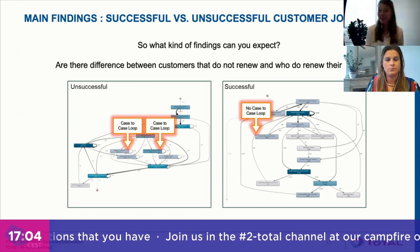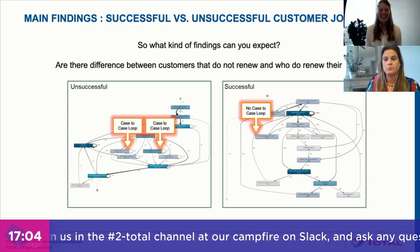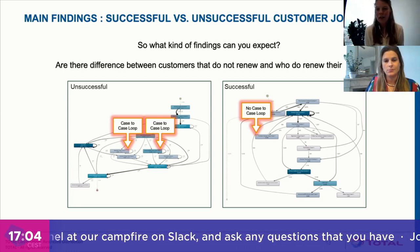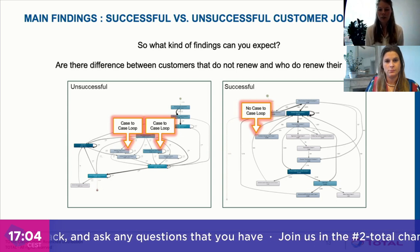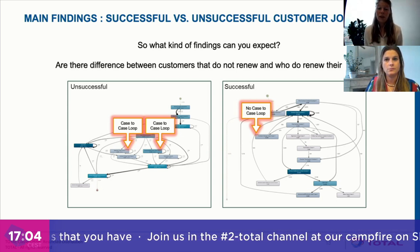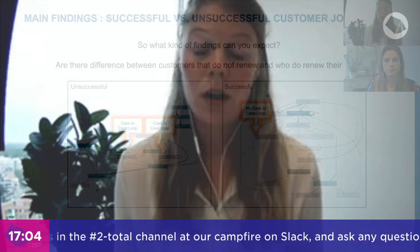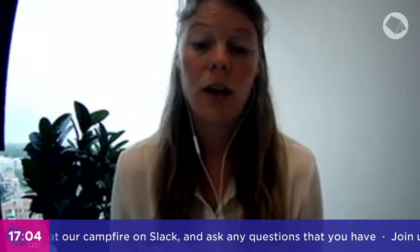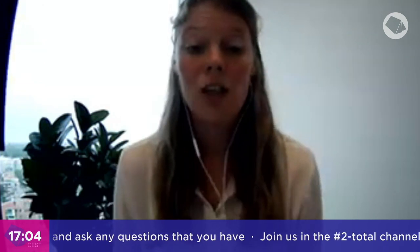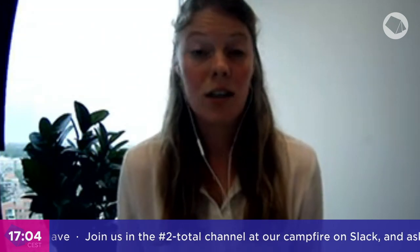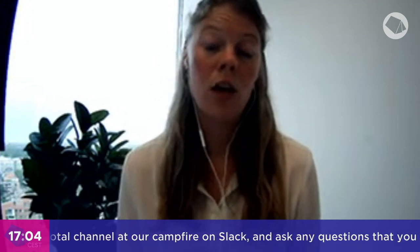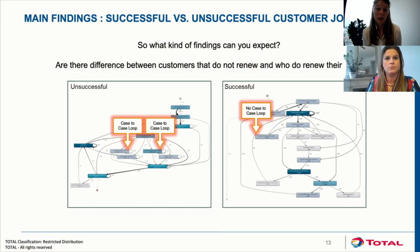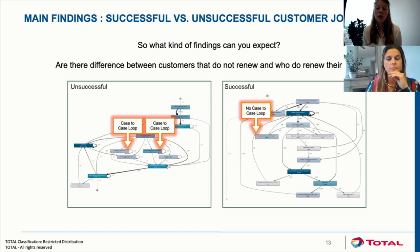We also found that in an unsuccessful customer journey, a customer request is followed by another customer request — a loop we did not find in a successful journey. We raised this with our operational people to ask what is going wrong: does it take too long to answer questions, or are there process improvements needed to limit the number of questions on this topic? So we found those three main improvements that could be made.